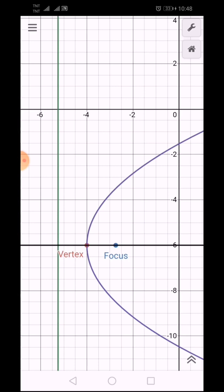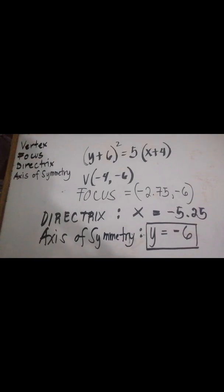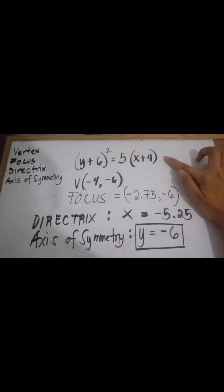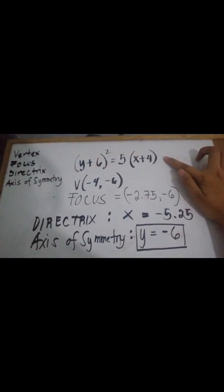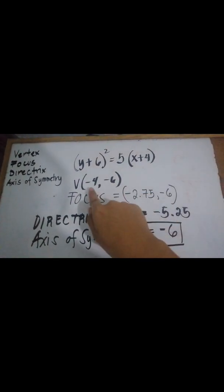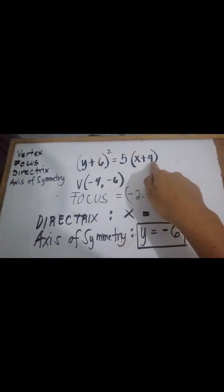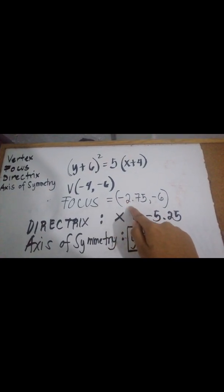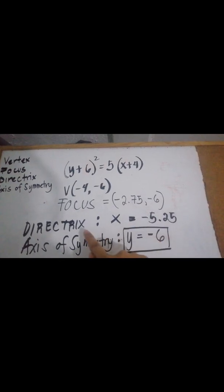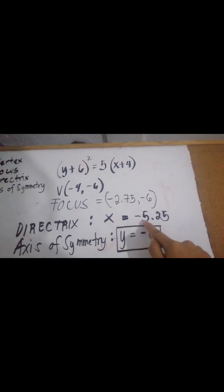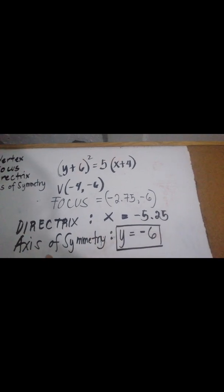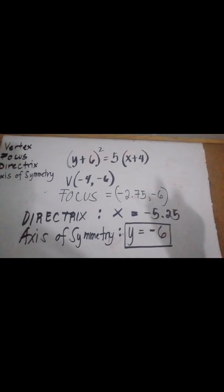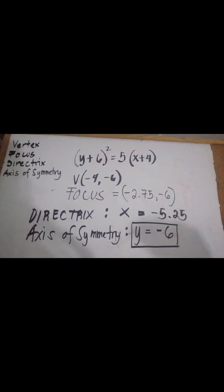Let's summarize our problem. The standard form is: the quantity of y plus 6 squared equals 5 times the quantity of x plus 4. Vertex: negative 4 and negative 6. Focus: negative 2.75 and negative 6. Directrix: x equals negative 5.25. Axis of symmetry: y equals negative 6. Do you have more questions? Let's solve more problems.